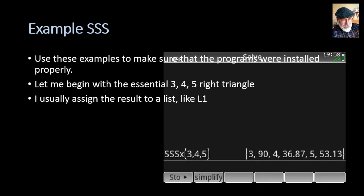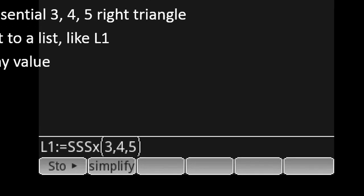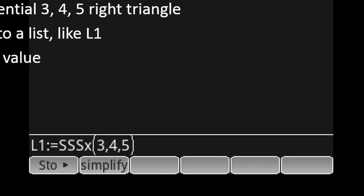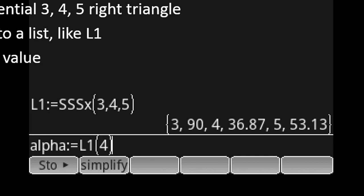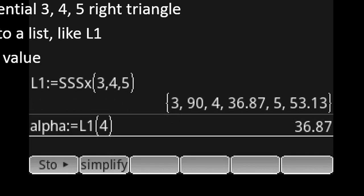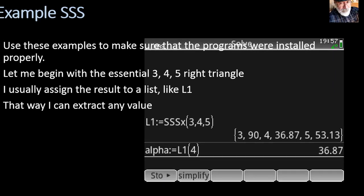Normally, I assign the results of SSS to a list like L1 in this case. That way, I can extract any value to proceed with the computation. See, this way, I assigned the list with the six values to L1. That way, I can say things like, take the fourth element in L1 and assign that to the variable name alpha. That would be an angle, and that's excellent.